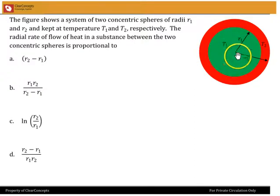So this is the setup: two concentric spheres, inner radius R1, outer radius R2, inner temperature T1, outer temperature T2.